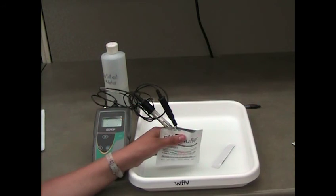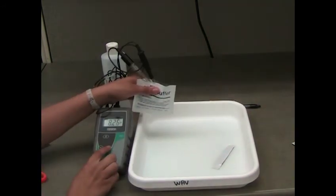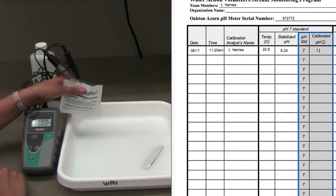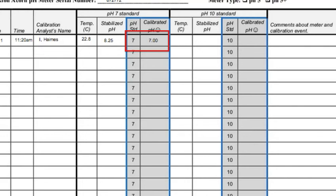When in calibration mode, the numbers will continue to flash. Press the enter key and record the calibrated pH value on the datasheet. Check that the calibrated value is within 0.2 of the pH buffer standard.